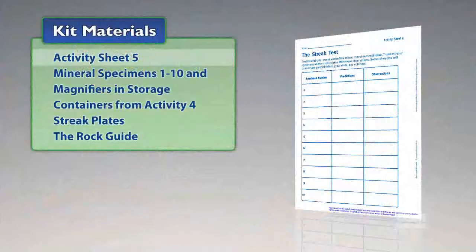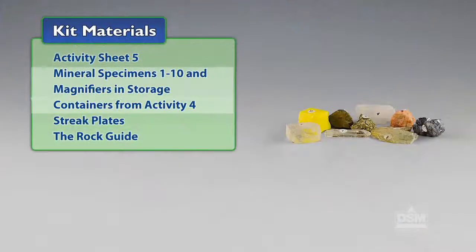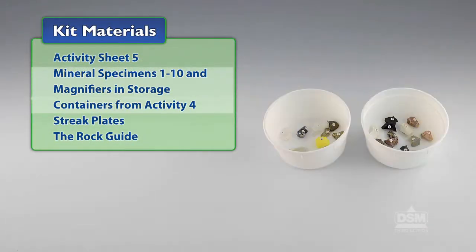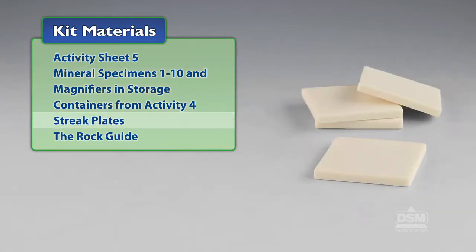You will need the following materials from the kit: Activity Sheet 5, mineral specimens 1 through 10, magnifiers in storage containers from Activity 4, streak plates, and the rock guide.